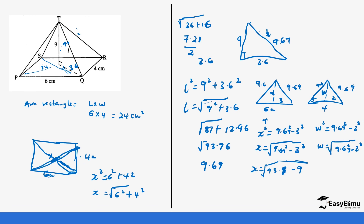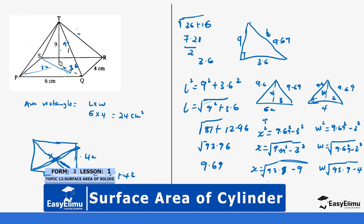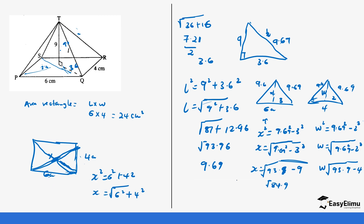In both cases, 9.6² = 93.96. For x: 93.96 − 9 = 84.96, so x = √84.9 ≈ 9.2 cm. For w: 93.96 − 4 = 89.96, so w = √89.9 ≈ 9.5 cm.